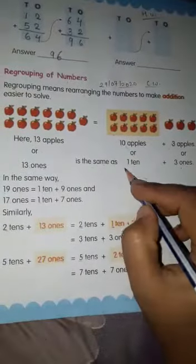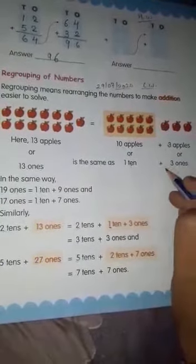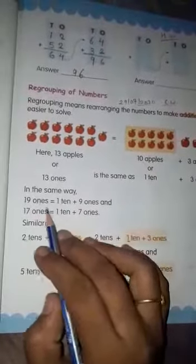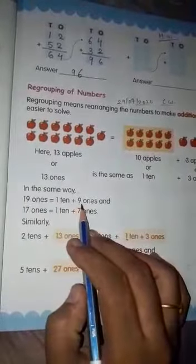13 ones is the same as 1 ten plus 3 ones. Tens means what? 1 ten. And 3 means what? 3 ones. In the same way, 19 ones equals 1 ten plus 9 ones.